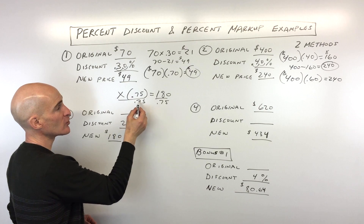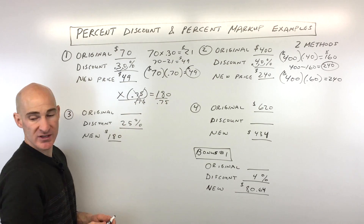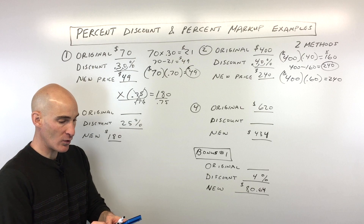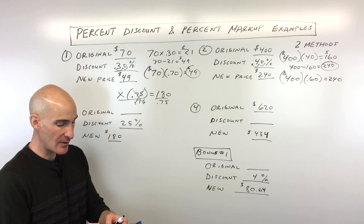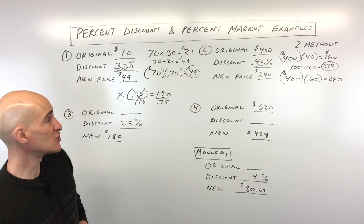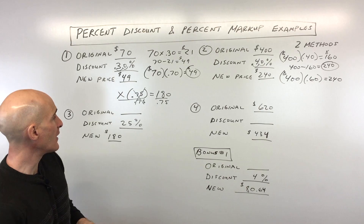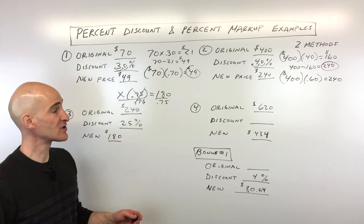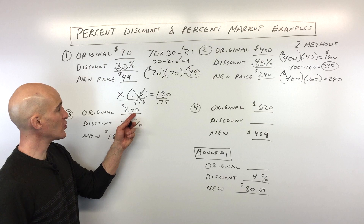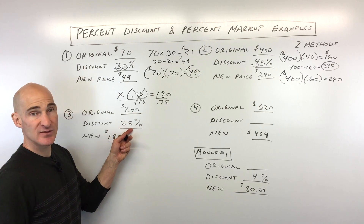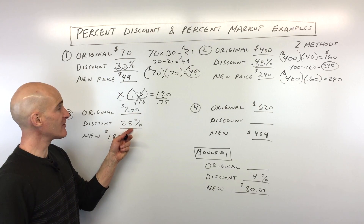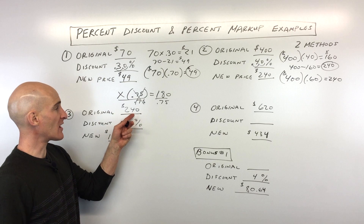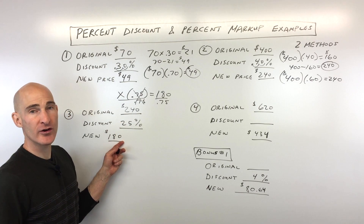Dividing both sides — $180 divided by 0.75 gives us $240. To check your work, take $240 times 0.25 to find how much you're saving, subtract that from $240, and you'll get $180.